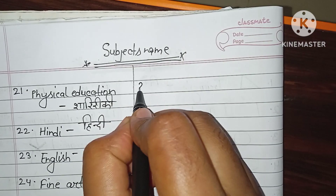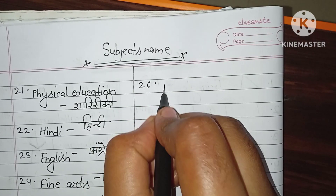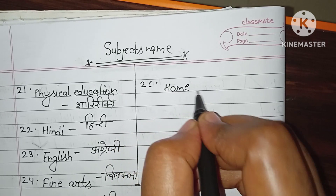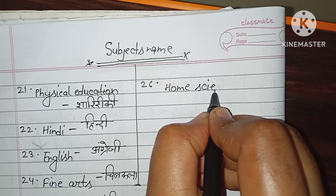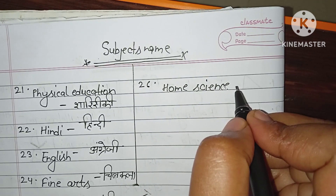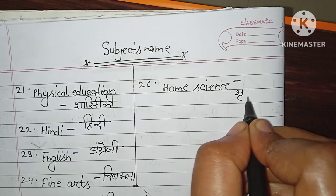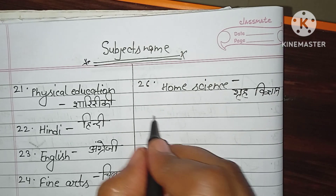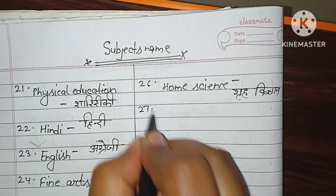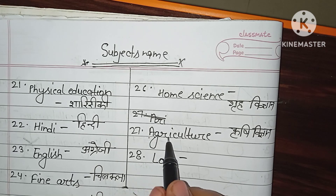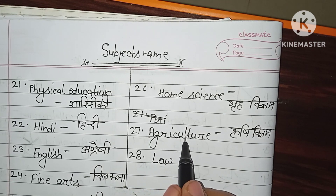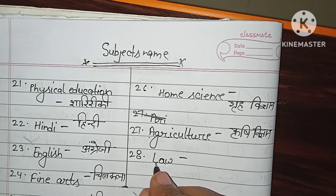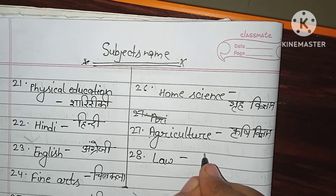Number 26, Home Science, H-O-M-E S-C-I-E-N-C-E. Agriculture, A-G-R-I-C-U-L-T-U-R-E, Krishivigyan. Number 28, Law, Kanun.